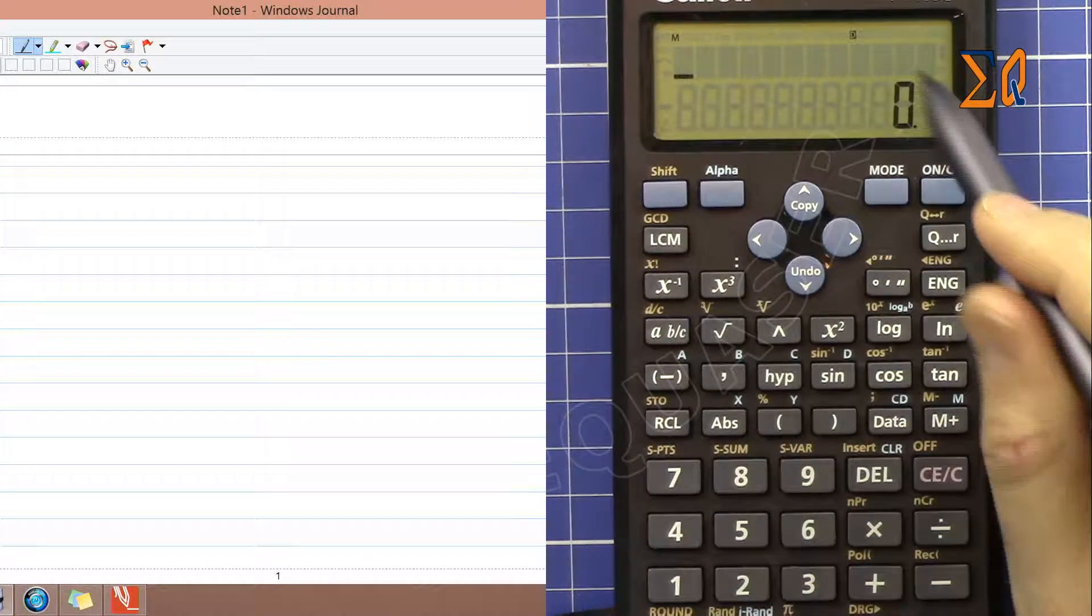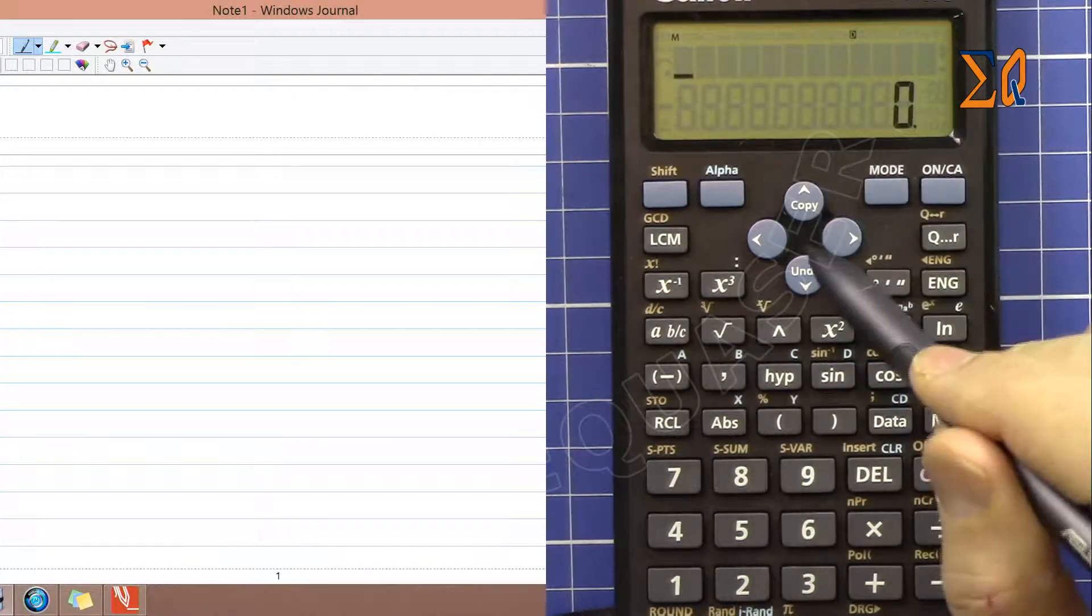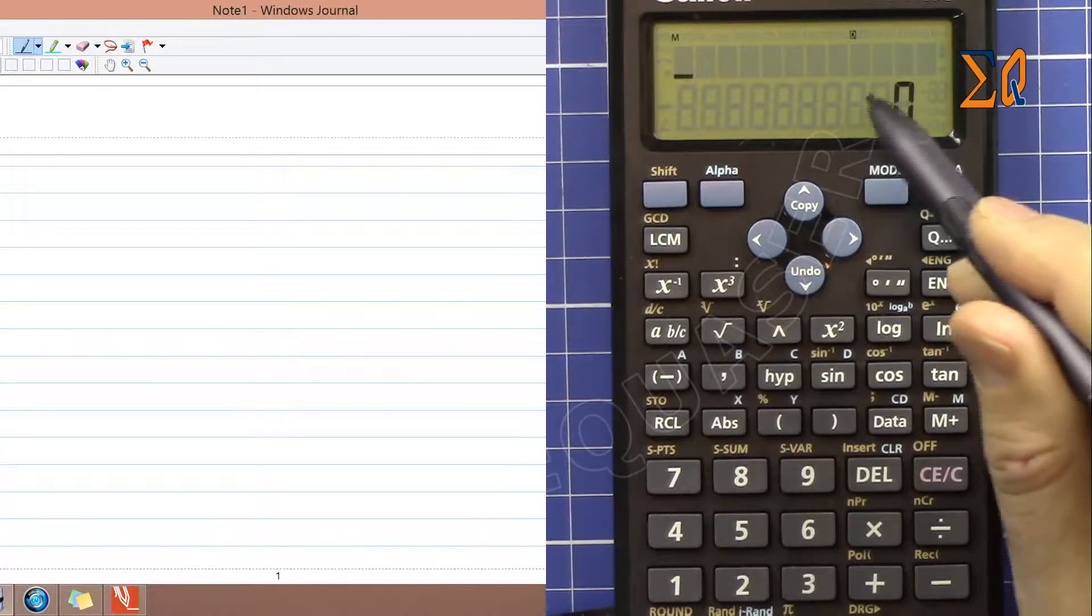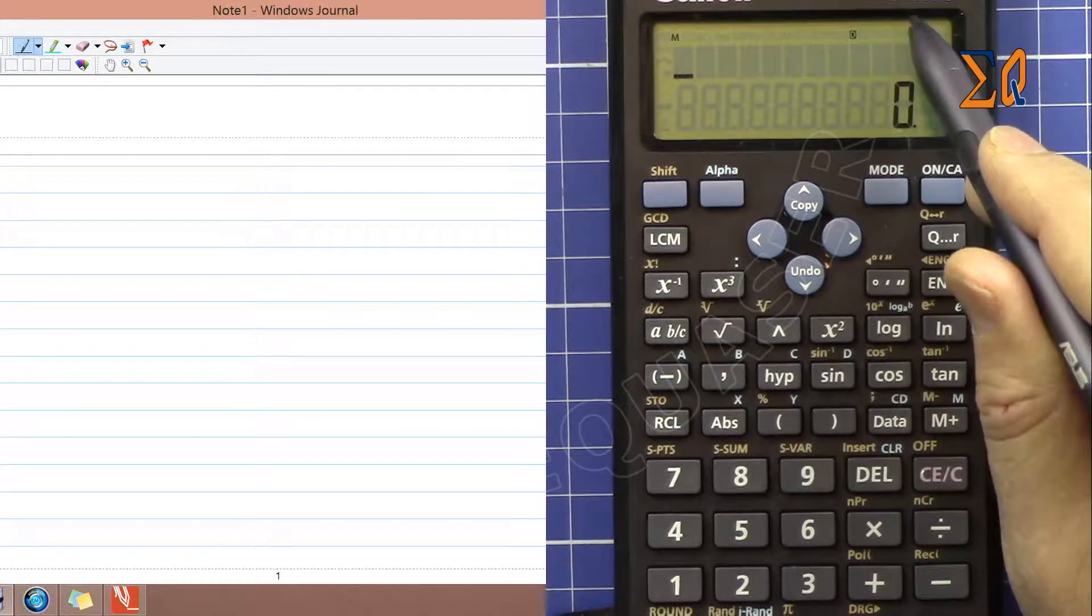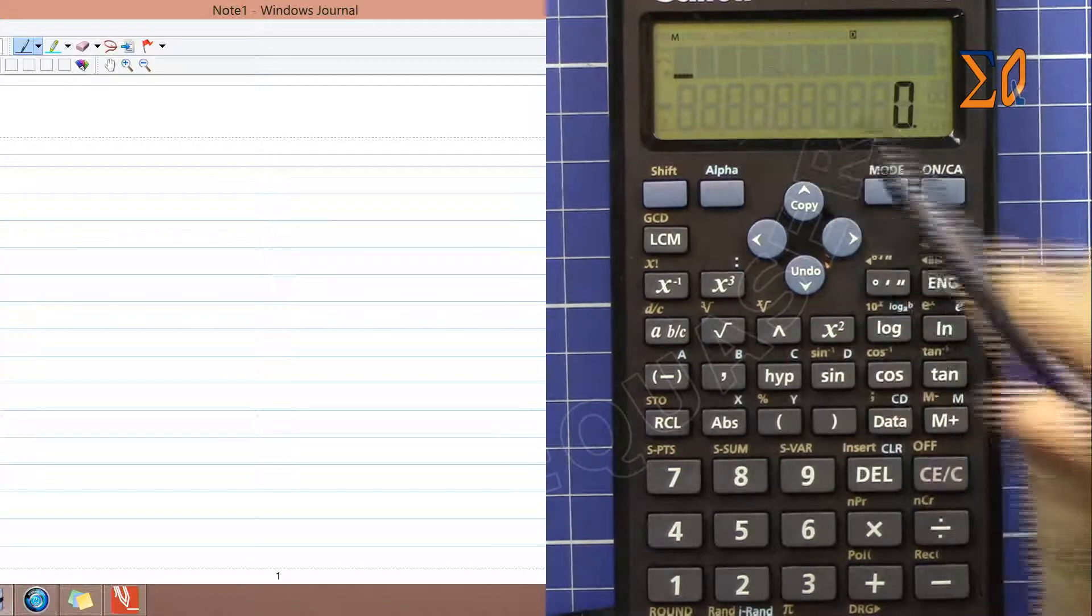Hi, welcome to Equasor. In this video I'm going to show you how to convert degrees, gradients, and radians between each other using the F71SG Canon calculator.